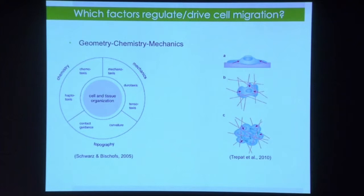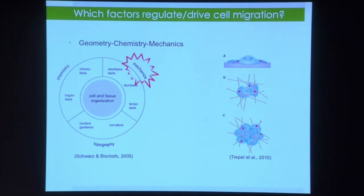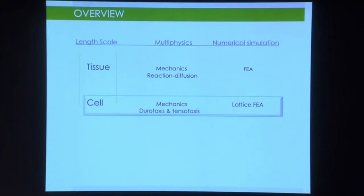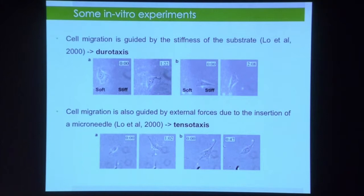Which factors drive cell migration? There is a combination of factors: geometry plays a role — how a cell moves on a planar versus a curved substrate — and chemistry also provides important chemical factors. In this lecture, I'm going to focus mainly on mechanics. Taking into account this limitation, I'm going to try to simulate different aspects of mechanics at the cell scale.